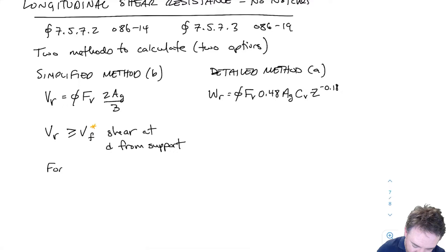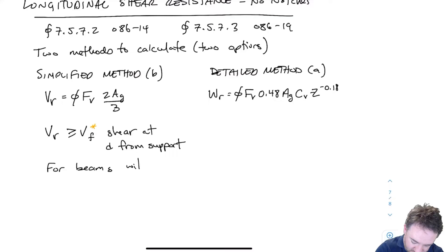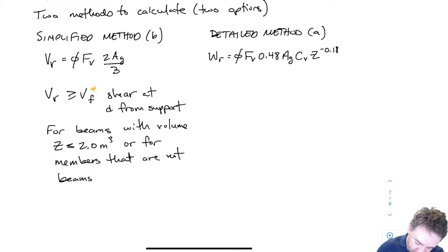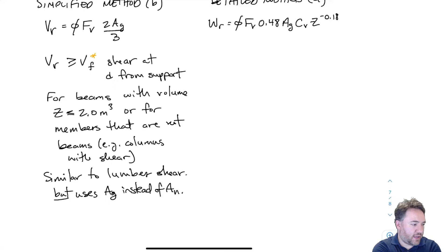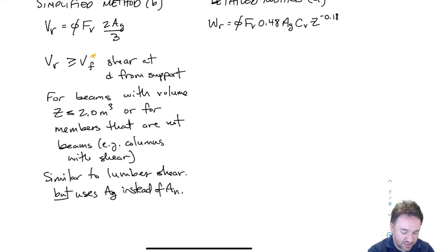When can I use this simplified method? I can use it for beams, as long as the volume of that beam is less than 2.0 meters cubed. The other case is for members that are not beams — so if I have a column that has some shear in it, a beam-column, then I can use this simplified method equation. For really big beams, I am not permitted to use this and will have to use the detailed method. This equation is similar to the lumber equation, except we're using G instead of N.